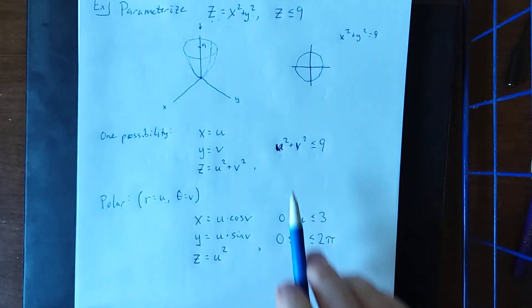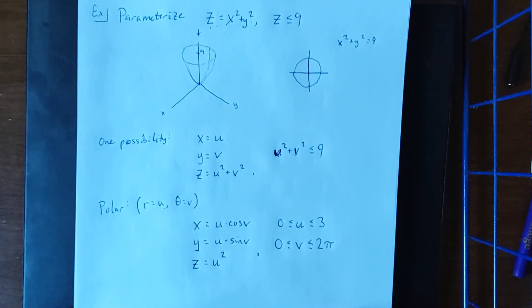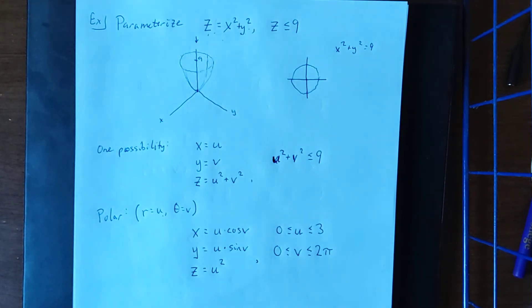So both of these parameterizations will give us the surface in question. There isn't really an advantage or a disadvantage to one or the other. It's just two different ways to do the same thing.